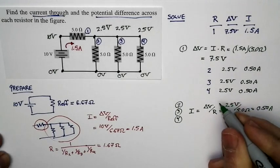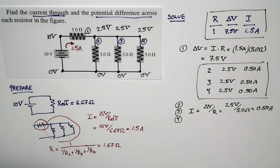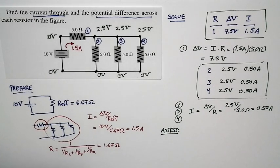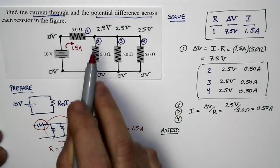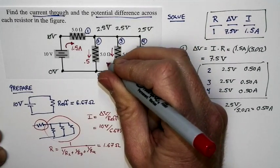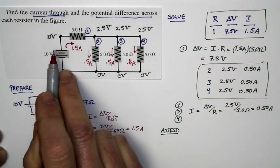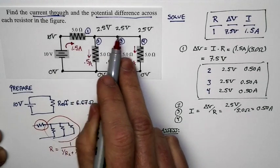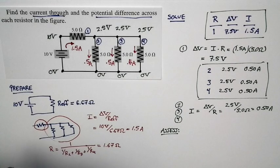We now have our final solution — a table of values for resistors 1, 2, 3, and 4. Let's do an assessment. At this junction in the circuit, 1.5 amps comes in. Out of it goes 0.5 amps through each of the three parallel resistors — 0.5 + 0.5 + 0.5 = 1.5 amps out. Since 1.5 amps in equals 1.5 amps out, our solution matches Kirchhoff's current law.